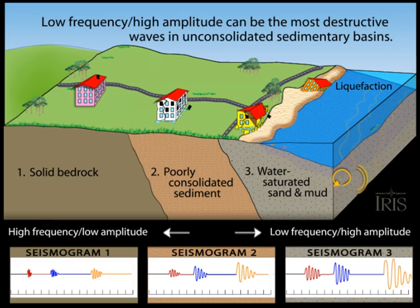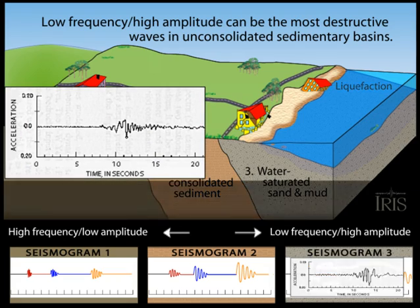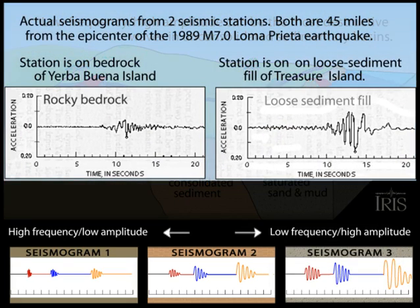The first seismogram from the pink building on solid ground shows low amplitude, high frequency waves. When the waves hit softer ground, they slow down and increase in amplitude.